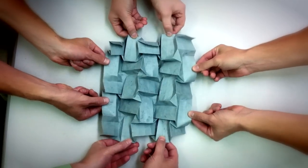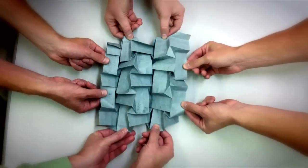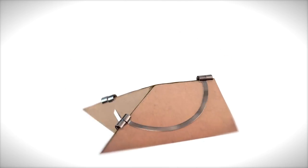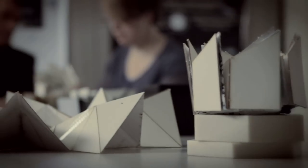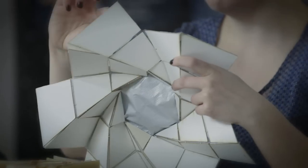In engineering terms, origami is a compliant mechanism. A compliant mechanism is a device that gets its motion from things like bending and deflection instead of hinges and bearings. Origami by nature is compliant because all of those folding hinges are relying on the flexibility in the paper.